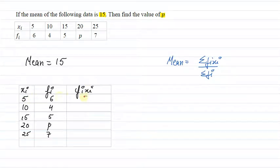5 times 6 that will be equal to 30. This will be equal to 40. 15 times 5 is 75. And 20 times P will be 20P. 25 times 7, if we do it here, we will get 175.